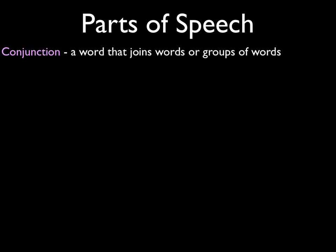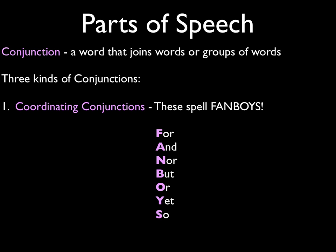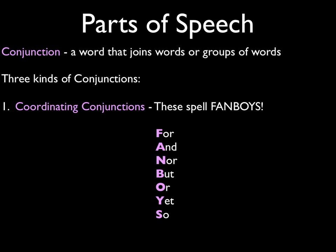Another part of speech is the conjunction, a word that joins words or groups of words. 'Con' means with or together, and a junction is a place where things come together. There are three kinds of conjunctions. First, coordinating conjunctions bring together clauses of equal value, and the little words that do this actually spell the word FANBOYS: for, and, nor, but, or, yet, and so. If you're trying to remember what those coordinating conjunctions are, just make the word FANBOYS.